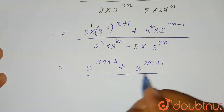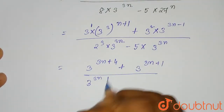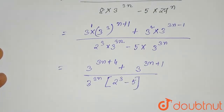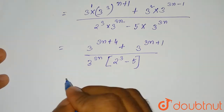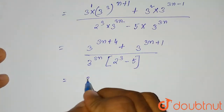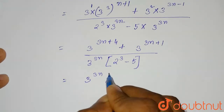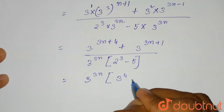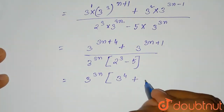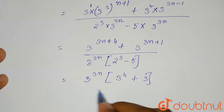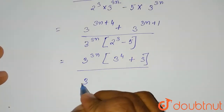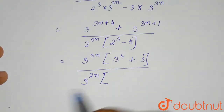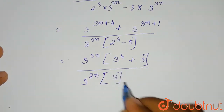Divided by: if we take 3 to the power 3n common from the denominator, it will be 2 cubed minus 5. Then taking 3 to the power 3n common from the numerator as well — plus 4 means there will be a 3 to the power 4 multiplied, so it will be 3 to the power 4 plus 3, as the remaining term is plus 1. Divided by 3 to the power 3n, it will be 2 cubed, that means 8 minus 5, which equals 3.